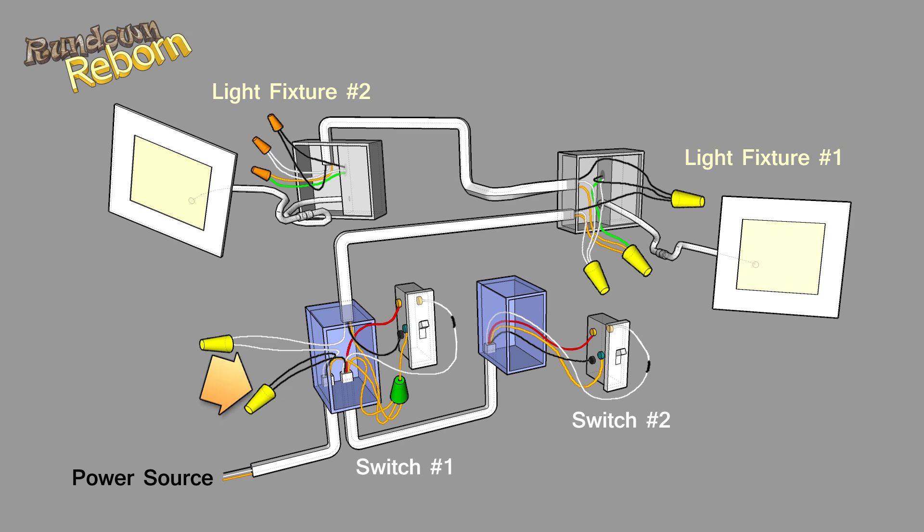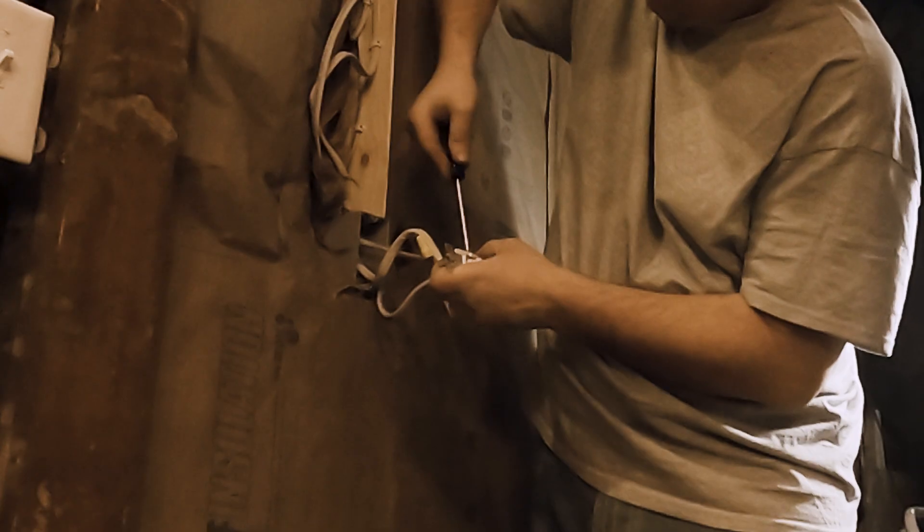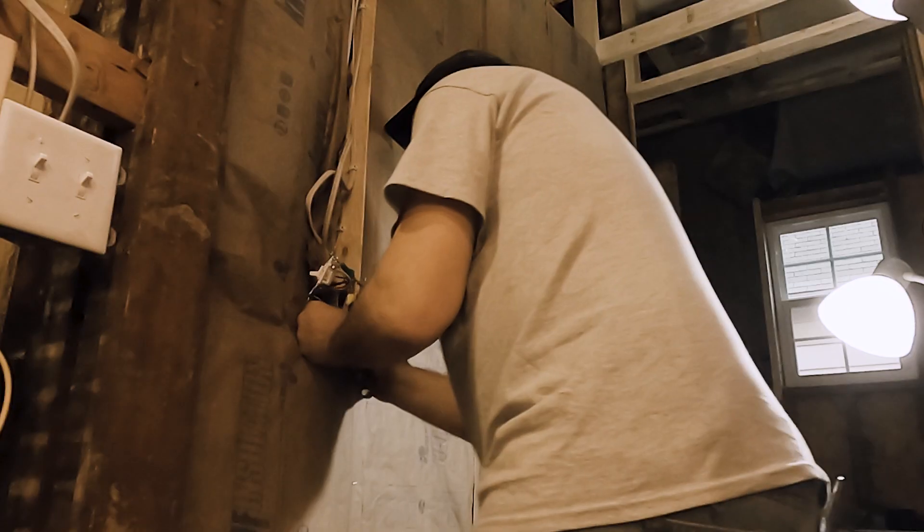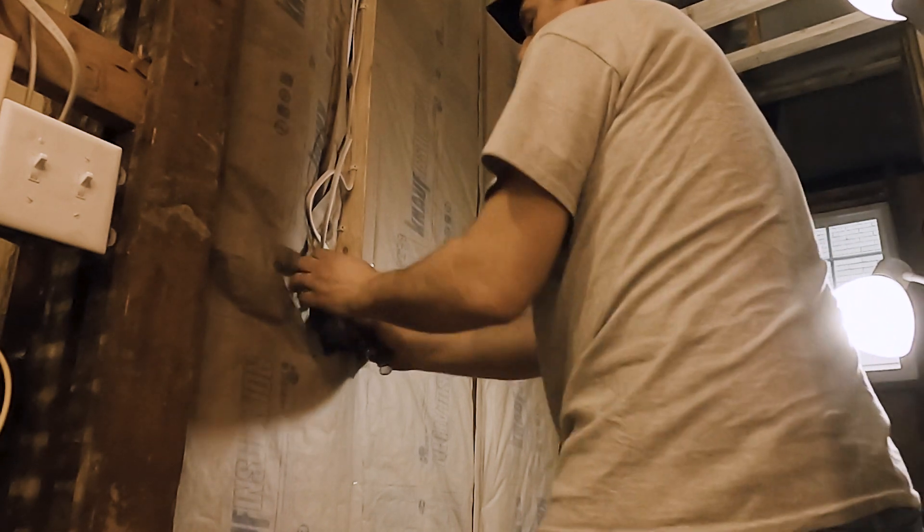The remaining two black wires are connected together. These are the wires coming from the power source and the second switch. Once all the connections are made, we can set the switch back into the box.